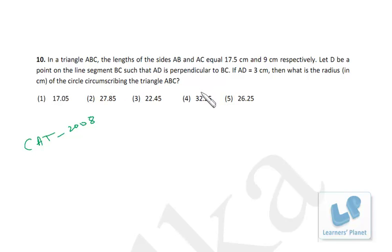Precisely, we have to find out the circumradius. So this is ABC - this is 17.5, this is 9, this we don't know, this is 3. And suppose this is A, this is B, and this is C.